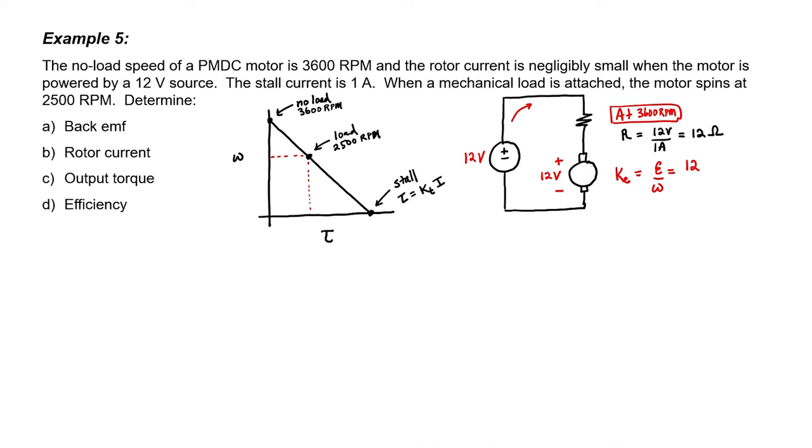It's not too difficult now to find the back EMF constant because I know both the back EMF and the speed. After converting 3600 rpms into radians per second, we end up with a value for the back EMF constant. I'm going to put a box around it because this is a constant that applies to every point along that line in the graph.